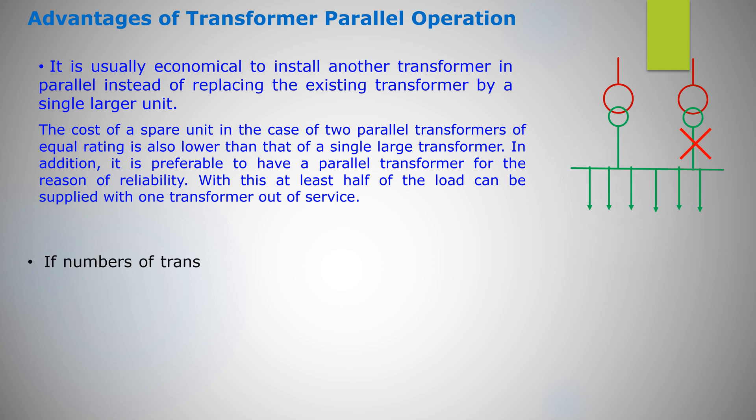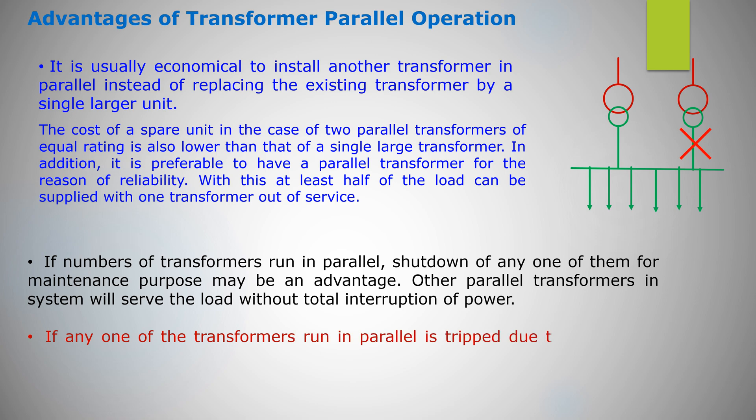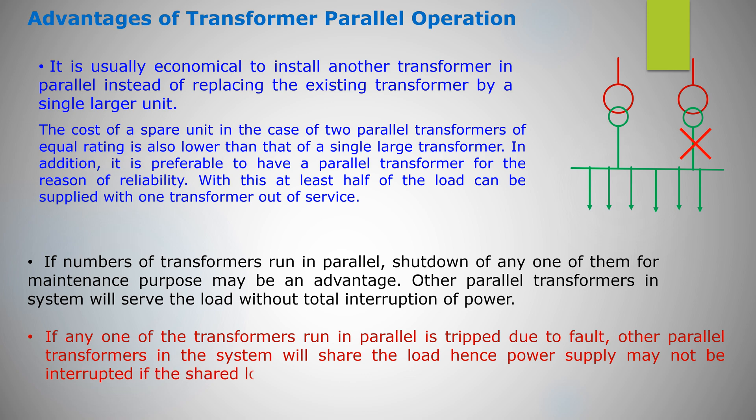If numbers of transformers run in parallel, shutdown of any one of them for maintenance purpose may be an advantage. Other parallel transformers in system will serve the load without total interruption of power. If any one of the transformers run in parallel is tripped due to a fault, other parallel transformers in the system will share the load. Hence, power supply may not be interrupted if the shared loads do not make other transformers overloaded.